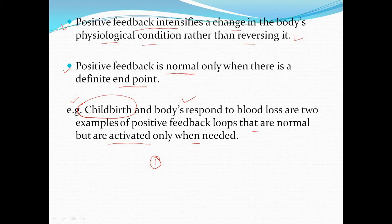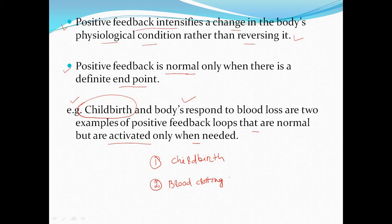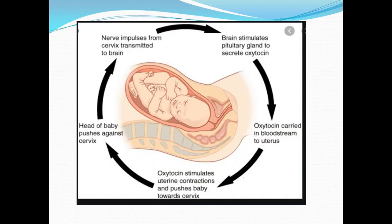The major examples I have given in this lesson: one is childbirth, and second is blood clotting. These are the two processes of positive feedback loop. Here I have given an image uploaded from Google Images — you can also refer to Google for this image, as other images are also available.